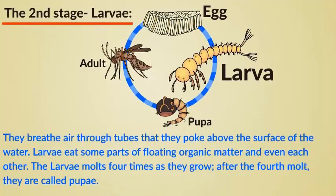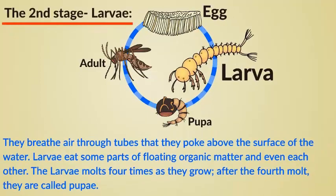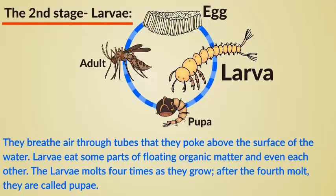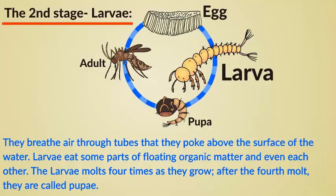The second stage: larvae. They breathe air through tubes that they poke above the surface of the water. Larvae eat some parts of floating organic matter and even each other. The larvae molts four times as they grow. After the fourth molt, they are called pupae.